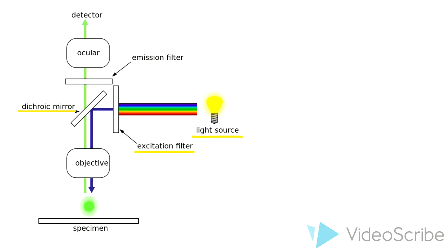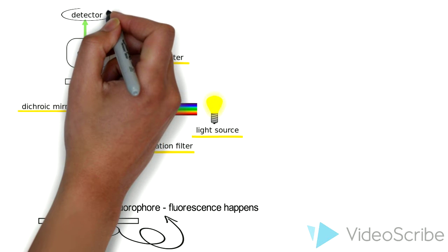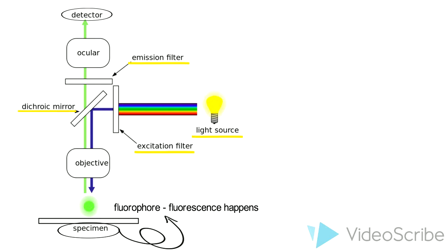After that, the light will reflect on a beam-splitting mirror before reaching the specimen. The fluorescence effect happens here and the specimen emits light with longer wavelengths and lower energy. This emitted light will be filtered again by an emission filter and reach a detector, which can be either human eyes or a digital camera.